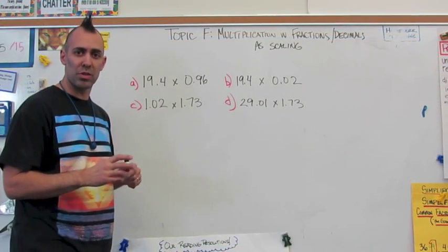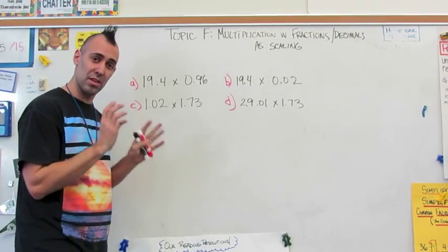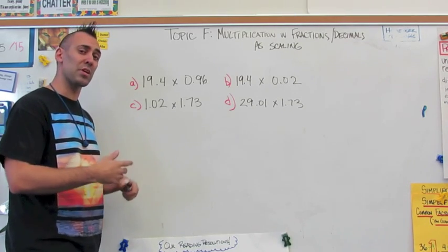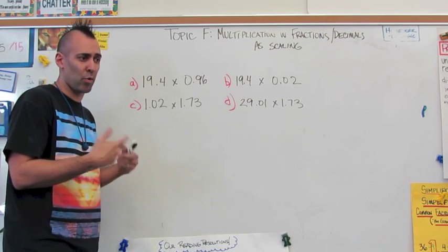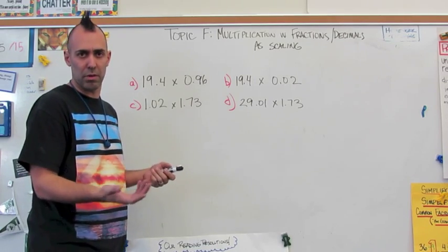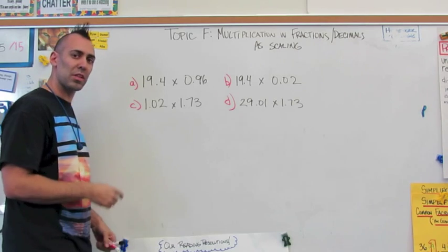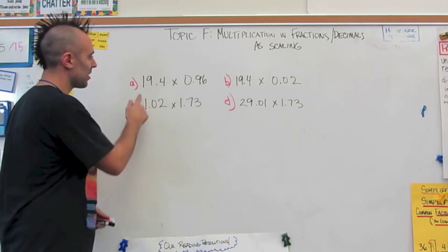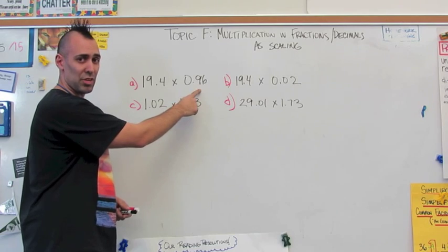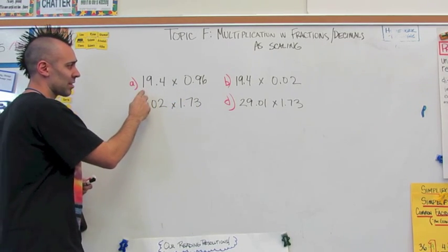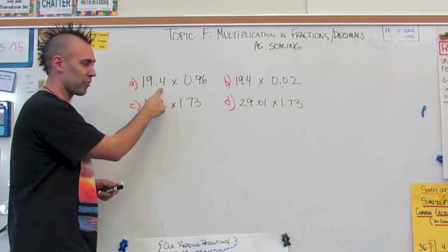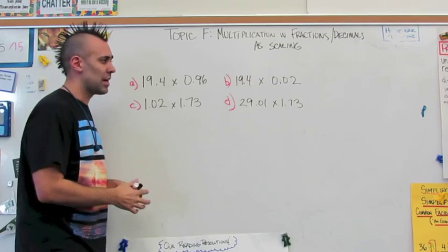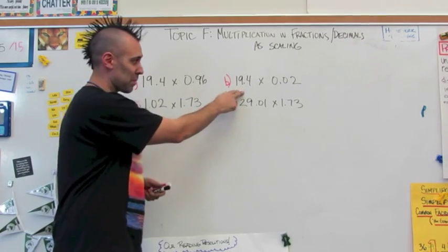Now that we've done some work with scaling factors with fractions, we're going to work with scaling factors with decimals. When kids come across a series of four problems, they're going to identify those scaling factors and use that to inform them of the probable outcome. For A, the scaling factor is 96 hundredths — a little bit less than one — so the product will be a little bit less than 19.4. For B, the scaling factor is two hundredths, pretty close to zero, so they'll know what the outcome will be.